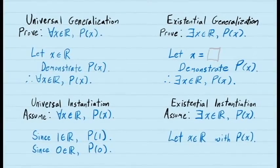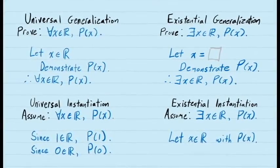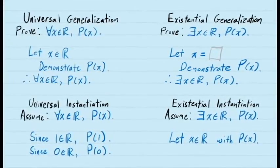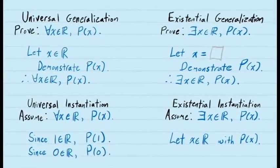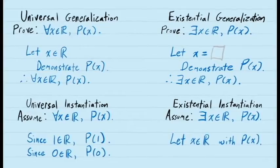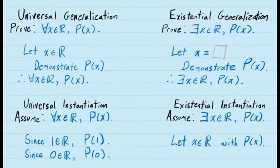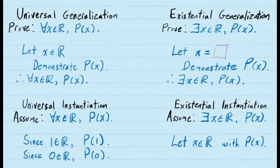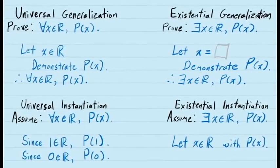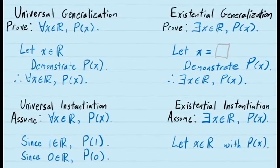At this point, we've talked about how to handle statements with universal and existential quantifiers in both the assumption part of our proof and in the conclusion part of our proof. All that remains is to try to put some of these ideas together. To do this, let's look at a few more complicated examples.